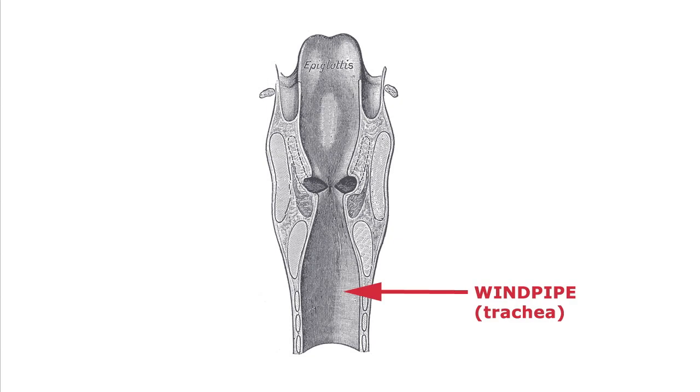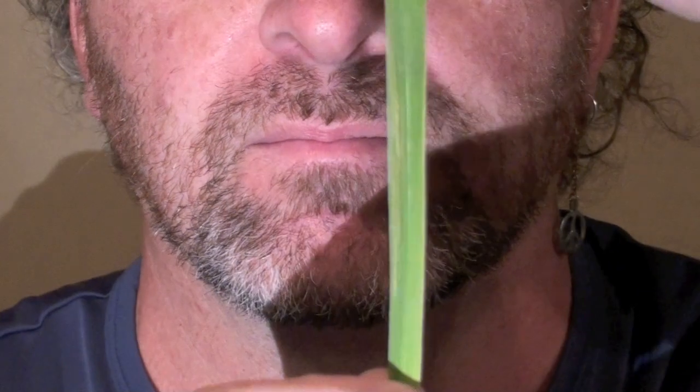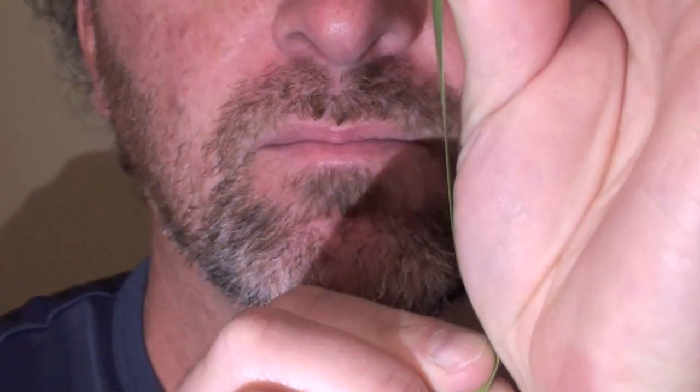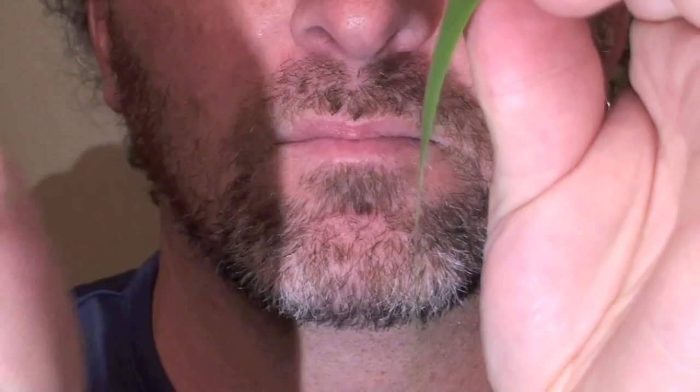These cords are really just folds of tissue that vibrate when air passes by them, much like the schoolyard trick of blowing across a piece of grass. The air makes the grass vibrate creating a high-pitched sound.